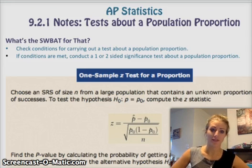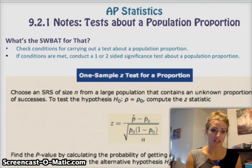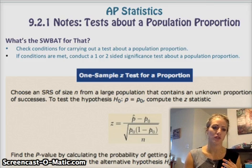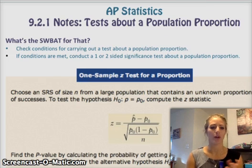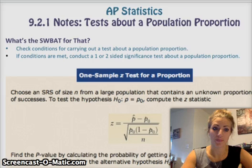Our SWABAT for today is being able to check conditions for carrying out a significance test for proportions, and then also actually conduct a one- or two-sided significance test for a proportion.